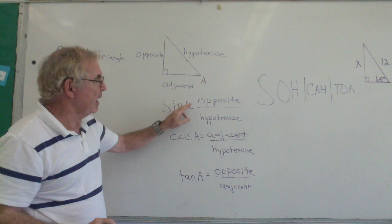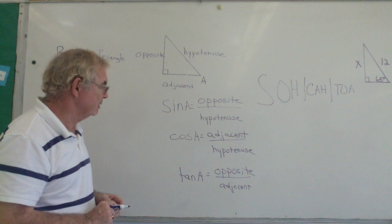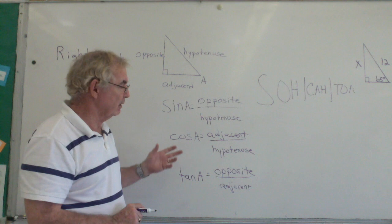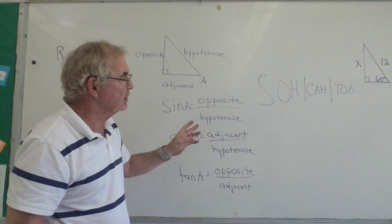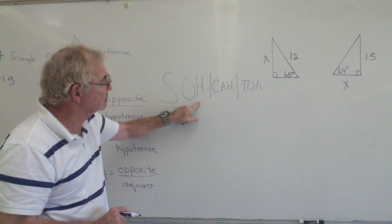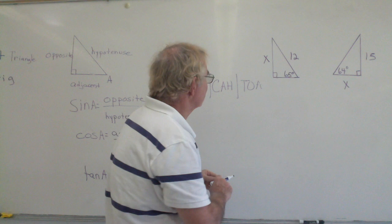Our three basic trigonometric ratios are: sine of an angle is opposite over hypotenuse; cosine of an angle is adjacent over hypotenuse; and tangent of an angle is opposite over adjacent. Some students like the mnemonic SOH-CAH-TOA — sine: opposite over hypotenuse; cosine: adjacent over hypotenuse; tangent: opposite over adjacent. This may help you remember.